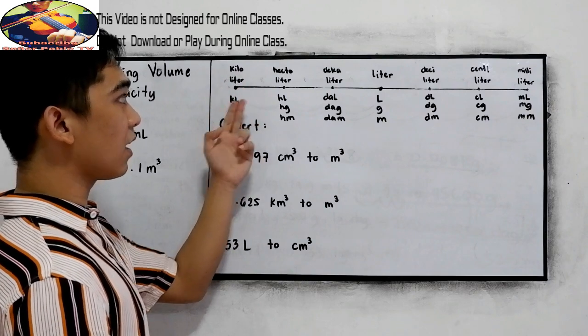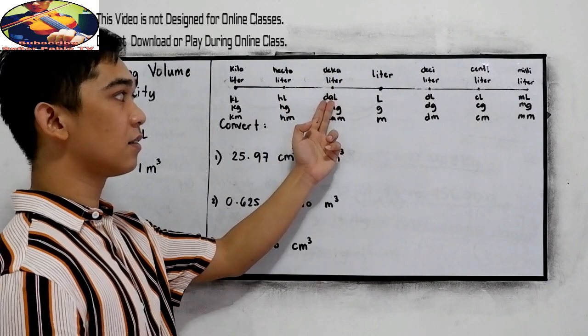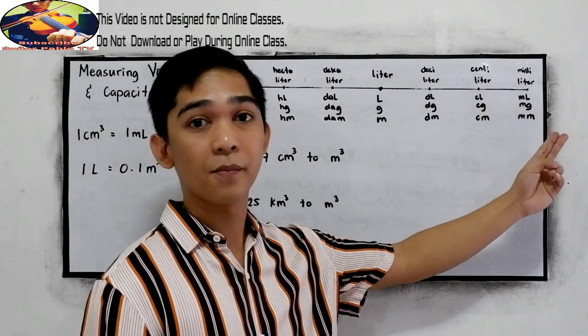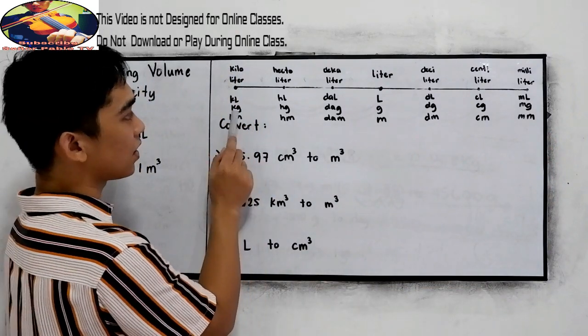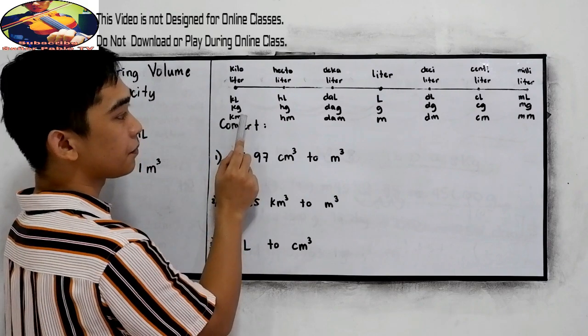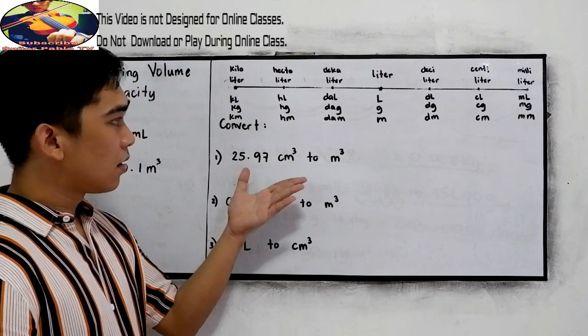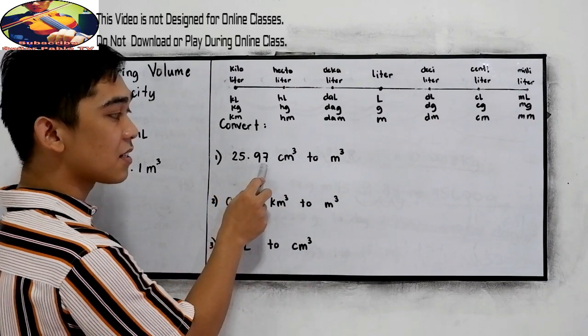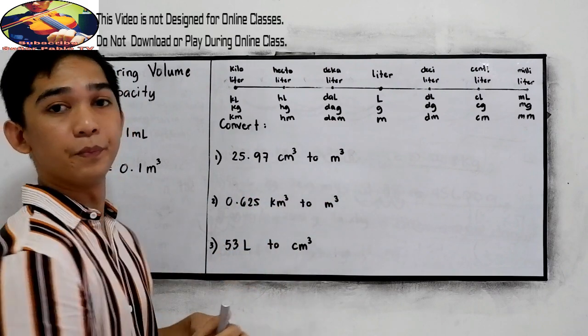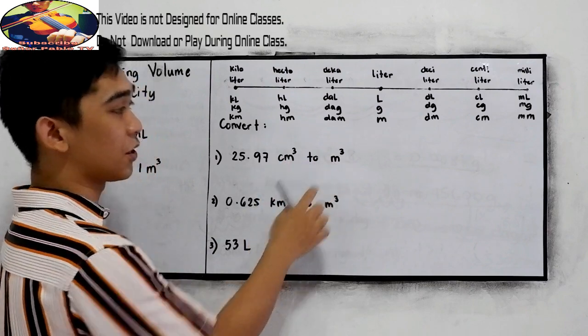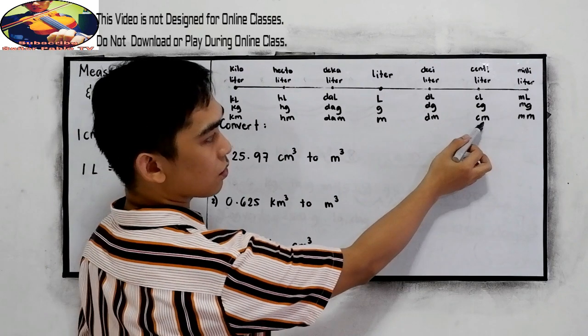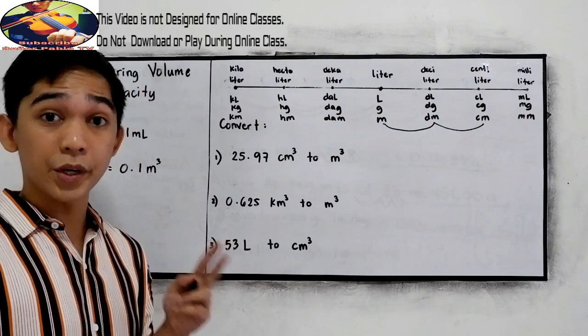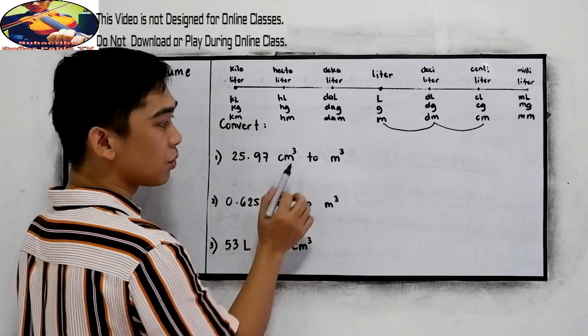So in our basic conversion, 1 cm³ is equal to 1 milliliter. And 1 liter is equal to 0.1 m³. Now we summarize here. We have the kiloliter for KL, hectoliter for HL, decaliter for DAL, liter for L, deciliter for DL, centiliter for CL, and milliliter for ML. And I wrote here also the measuring for mass and measuring for length.